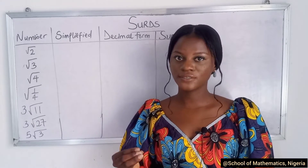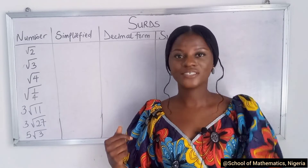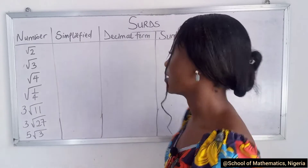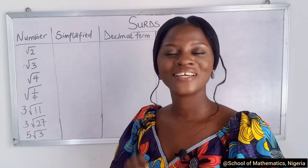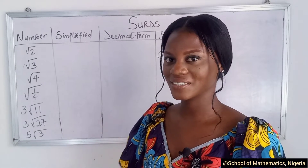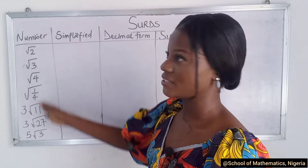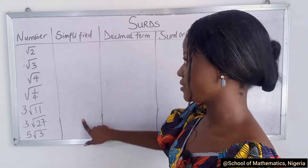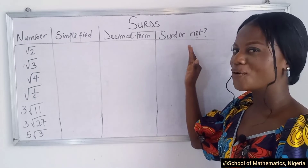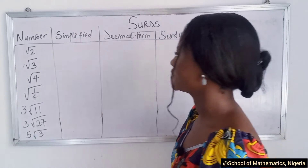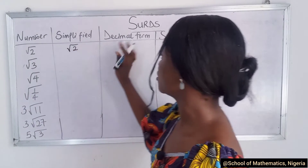You can also use your calculator — of course, we're dealing with roots. I also have my calculator here. I'll do the first one, you'll do the second one, I'll do the third one, and I'll probably leave others for you. We have numbers given to us. We'll simplify it, write it in its decimal form, and then tell if it's a surd or not. So now, √2 in its simplified form is still √2.